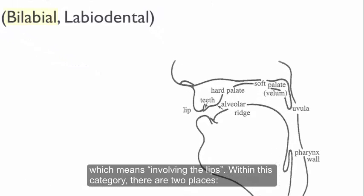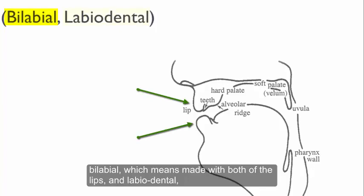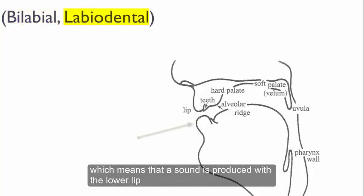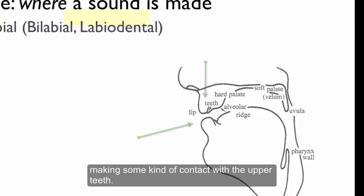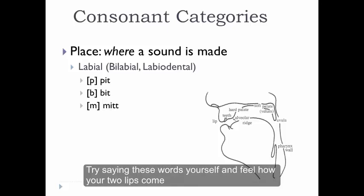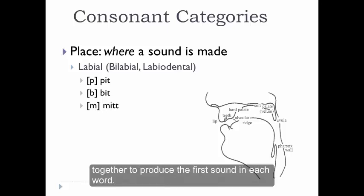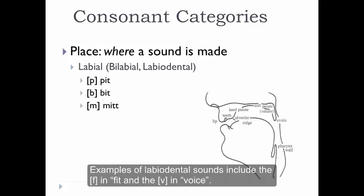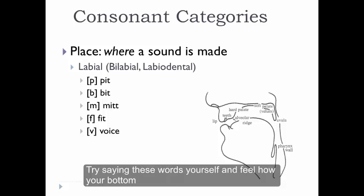Within this category, there are two places: bilabial, which means made with both of the lips, and labiodental, which means that a sound is produced with the lower lip making some kind of contact with the upper teeth. Examples of bilabial sounds include the p in pit, the b in bit, and the m in mit. Examples of labiodental sounds include the f in fit and the v in voice. Try saying these words yourself and feel how your bottom lip touches your top teeth at the beginning of each word.